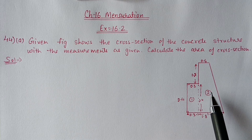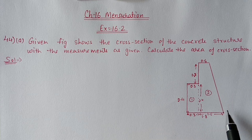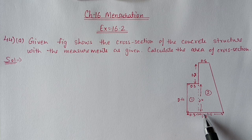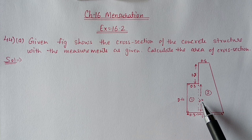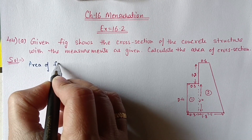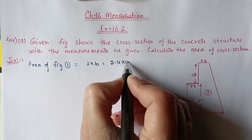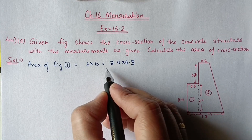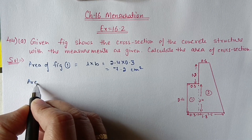The first part will become a rectangle and the second part will become a trapezium. The first part measurement will be 2.4 into 0.3. For the second figure (trapezium), the parallel sides are 1.5 and 0.6, and the distance between them is 1.2 plus 2.4. We will find their areas separately and then add. Area of figure one is length into breadth: 2.4 into 0.3.